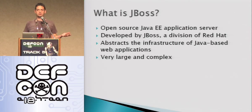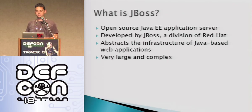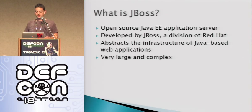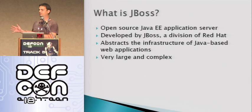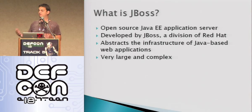So what is JBoss? It's a Java EE application server. People like it because it's open source. It's by JBoss, which is now a division of Red Hat. Basically what these application servers do is abstract the infrastructure so that developers can focus on just writing business logic. JBoss specifically is really big and complex — there's a lot of stuff in it, and I think that's where some of the issues we're going to talk about come from. There aren't a lot of straightforward ways to do things.